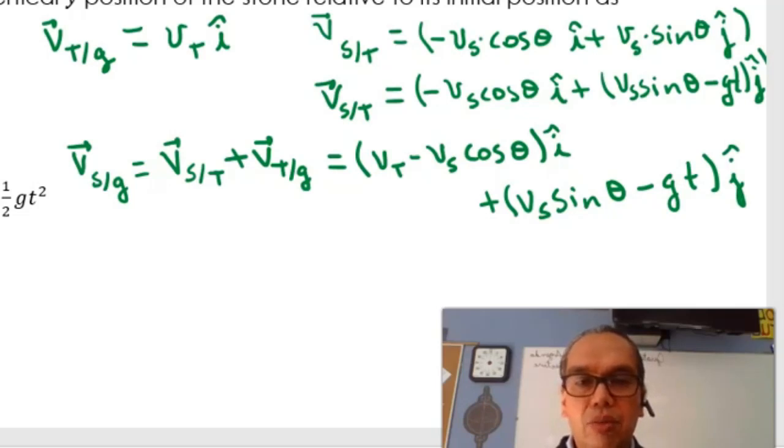position x should be simply given as the velocity in x times the time, so vT minus vs cosine of